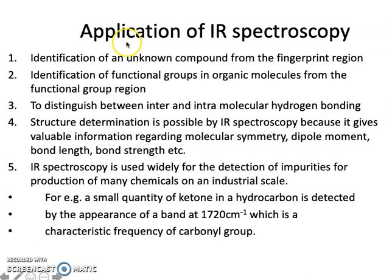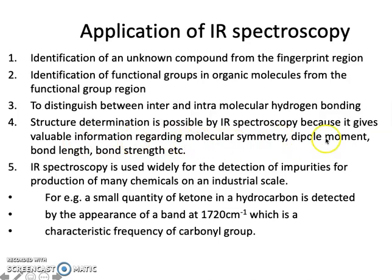The applications of IR spectroscopy are more extensive than UV-based spectroscopy. First, we can identify an unknown compound from the fingerprint region. Second, we can identify functional groups in organic molecules from the functional group region. Third, we can distinguish between inter- and intramolecular hydrogen bonding. Fourth, we can determine molecular structure, obtaining information on molecular symmetry, dipole moment, bond length, and bond strength. Fifth, IR spectroscopy is widely used for detection of impurities in chemicals produced on an industrial scale.